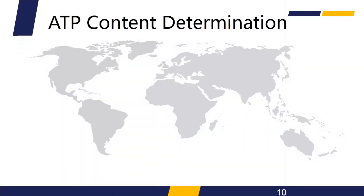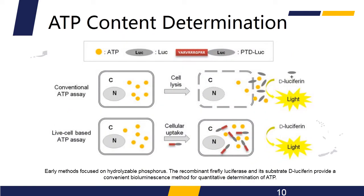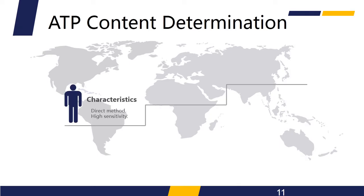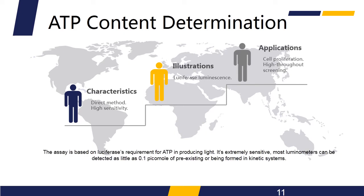Early methods focused on hydrolysable phosphorous. The use of firefly bioluminescence to measure ATP was first proposed by McElroy, who discovered that ATP was essential for light production. The use of firefly luciferase to measure ATP levels has been further advanced through the use of recombinant proteins. The recombinant firefly luciferase and its substrate D-luciferin provide a convenient bioluminescence method for quantitative determination of ATP. The assay is based on luciferase's requirement for ATP in producing light. It is extremely sensitive — most luminometers can detect as little as 0.1 picomoles of ATP.